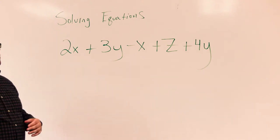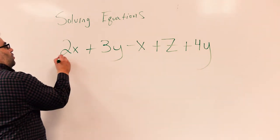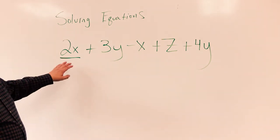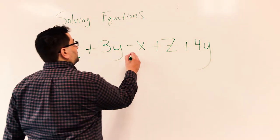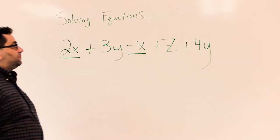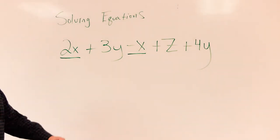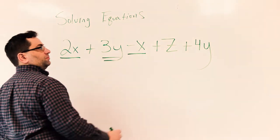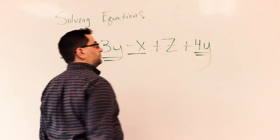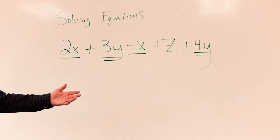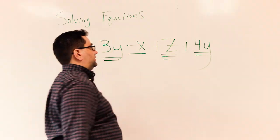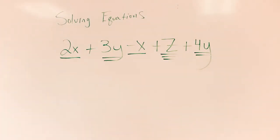First things first, let's start with 2x. What other term has an x in it? And then there's no more x's. Let's start with the y's. And then I look at the z's and I see that the z is all by itself. So now that I know what I can add and subtract, let's start to do so.